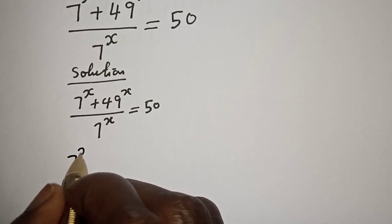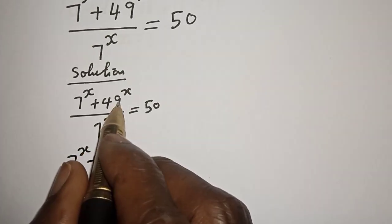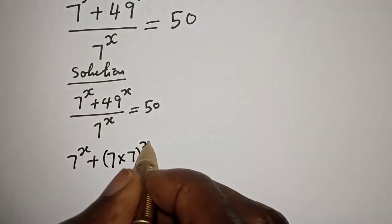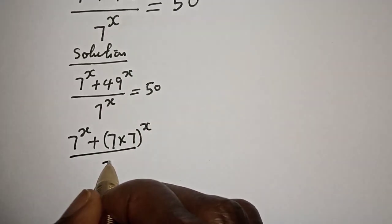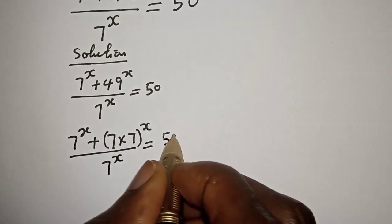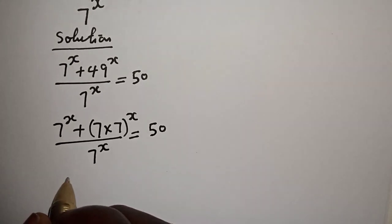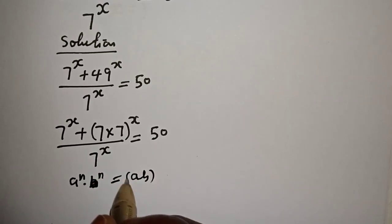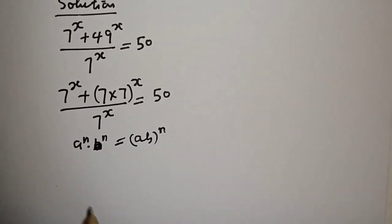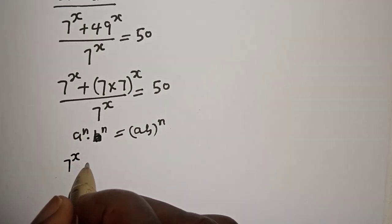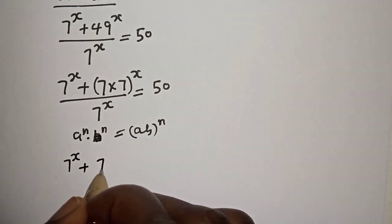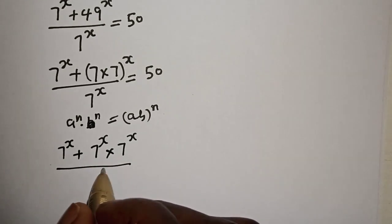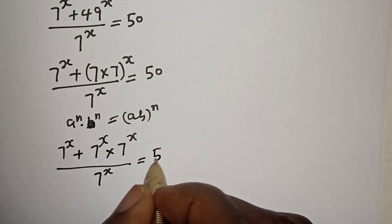This 7 raised to power s plus 49 raised to power s can be written as 7 multiplied by 7 raised to power s, all divided by 7 raised to power s, is equal to 50. Using the rule that a raised to power n multiplied by b raised to power n equals ab raised to power n, this becomes 7 raised to power s plus 7 raised to power s multiplied by 7 raised to power s, divided by 7 raised to power s, is equal to 50.